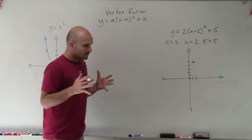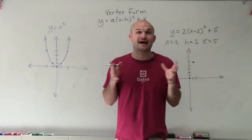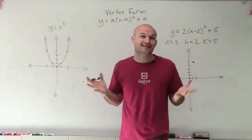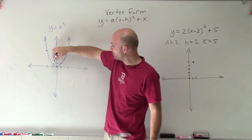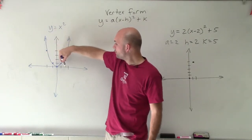Now, for the parent graph, when my a equals 1, and I'm not going to dilate my graph at all, I go over 1, up 1, over 1, up 1, over 2, up 4, over 2, up 4.